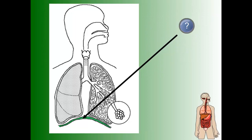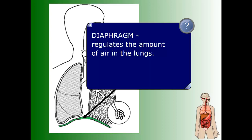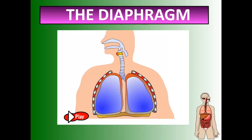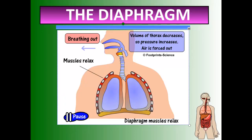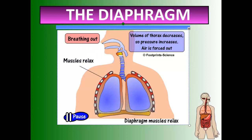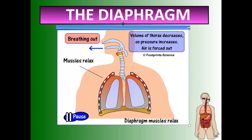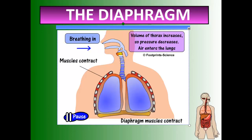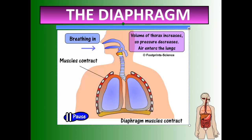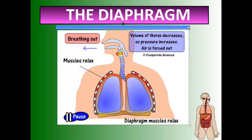The last structure is the diaphragm — that green line in the picture — which regulates the amount of air in the lungs. The diaphragm raises or lowers to let air in or force air out. When you breathe out, the diaphragm lifts and forces air out. When it drops, the lungs expand and air comes in due to a decrease in pressure. A relaxed diaphragm lets air go out; a contracted diaphragm lets air come in.